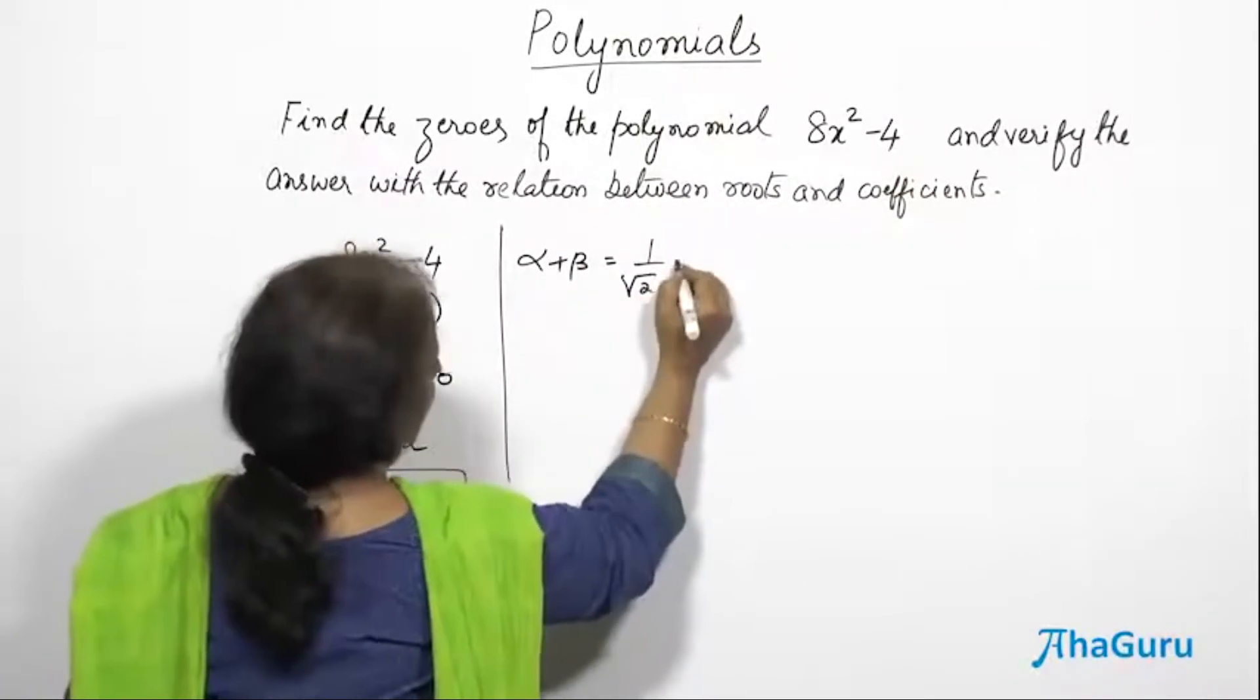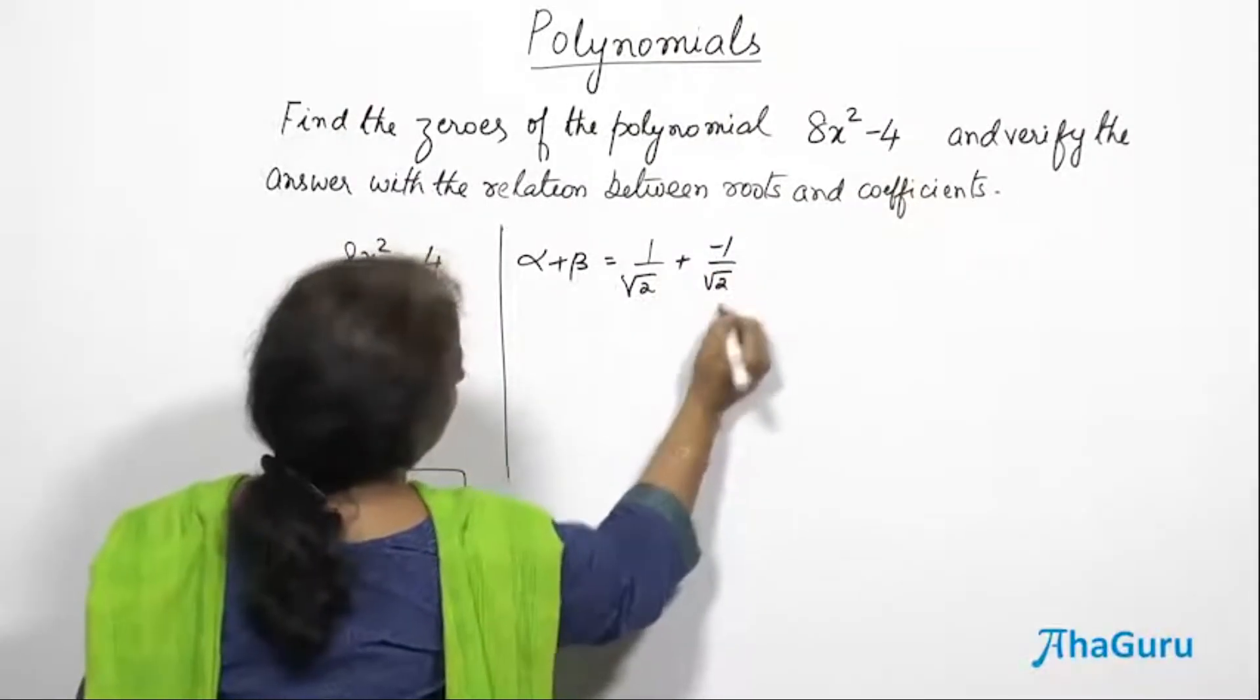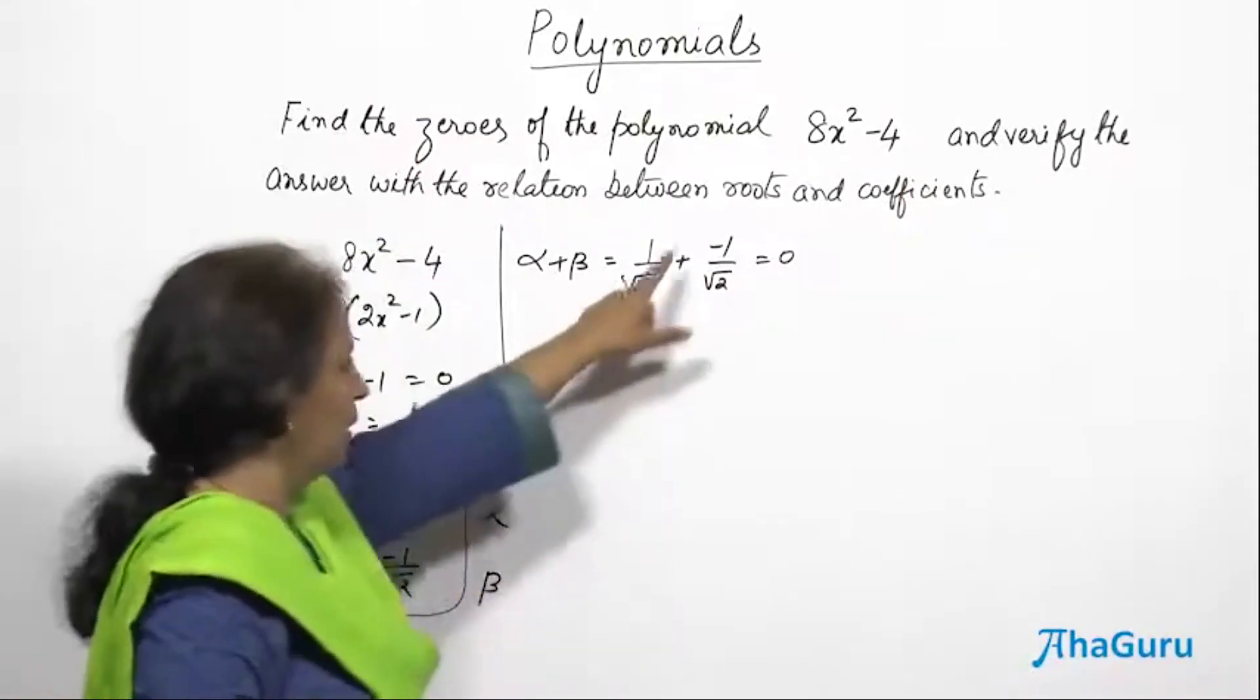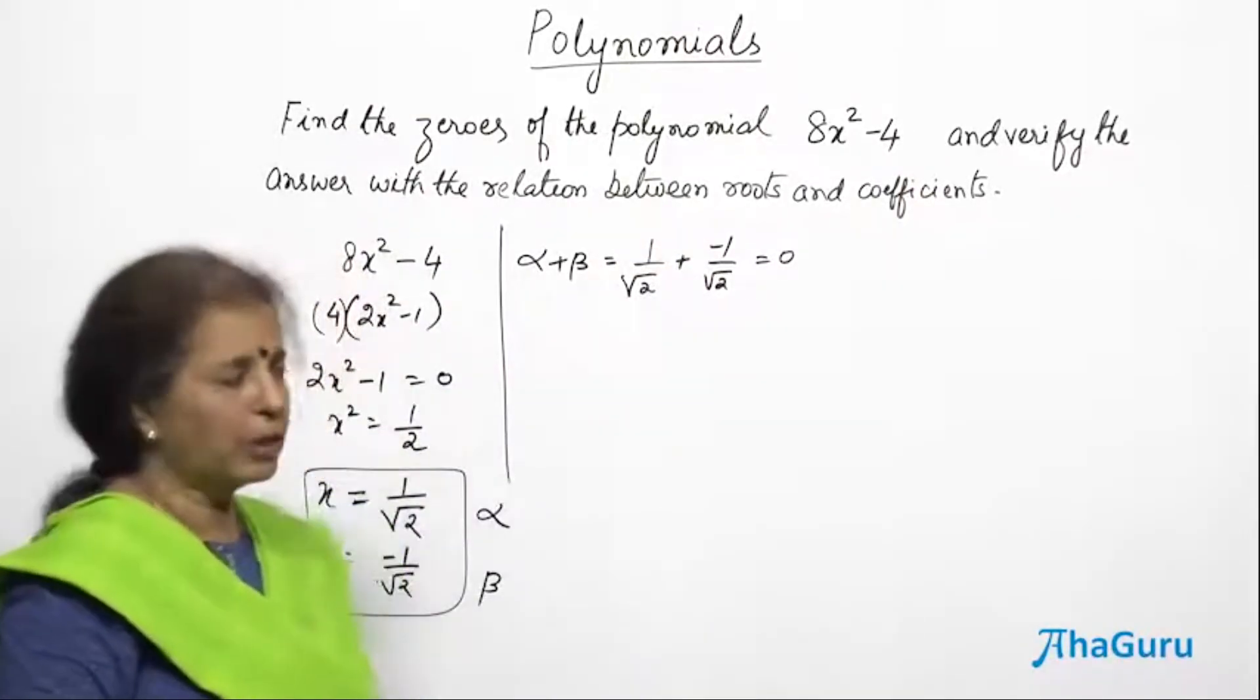When you add them, 1/√2 plus -1/√2 becomes 0. They are opposite terms, the same numerical value with opposite signs. So when they add up, they become 0.